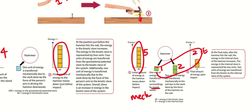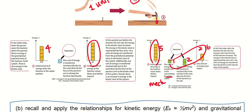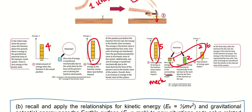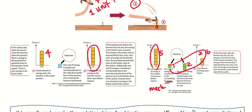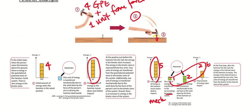The number of units of energy remains the same throughout all these examples — no energy is lost or created. It is simply transferred from one store to another. This demonstrates the success criteria for energy conservation.